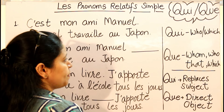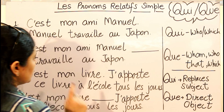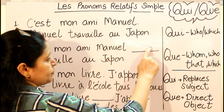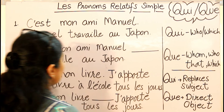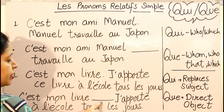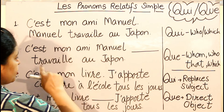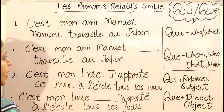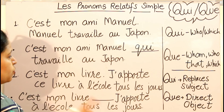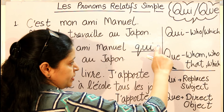In English this reads: 'This is my friend Manuel who works in Japan.' Now 'who' means QUI. The rule to remember: whenever after the blank there is a verb, you need to write QUI — this works in 80% of cases. Whenever there is a noun, subject, or pronoun after the blank, you write QUE. So here: 'C'est mon ami Manuel QUI travaille au Japon' — after the blank there is a verb, so we use QUI.